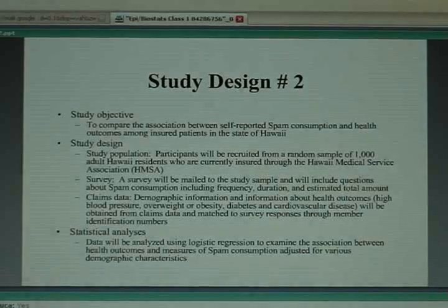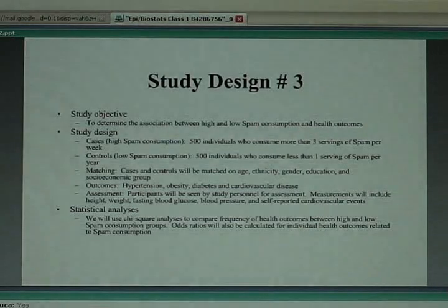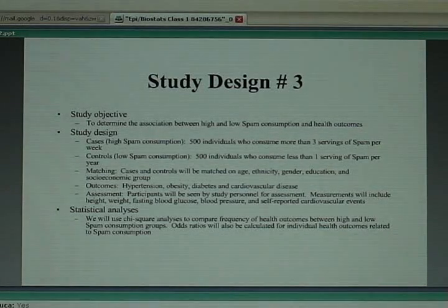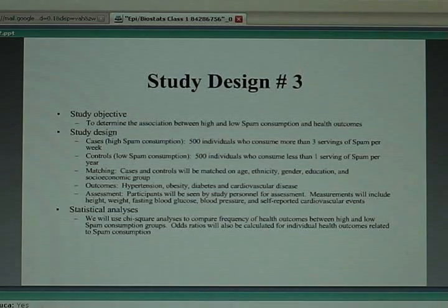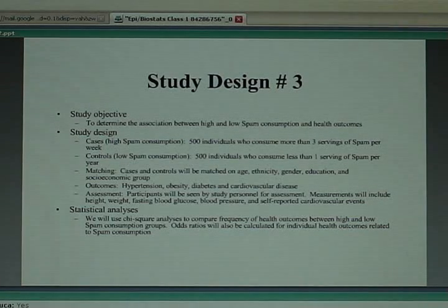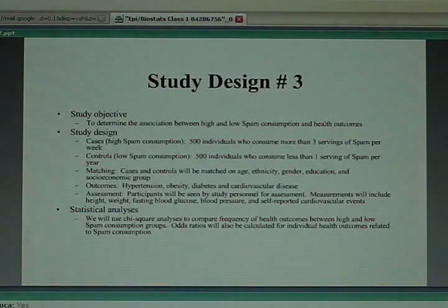Finally, someone proposed enrolling 500 consumers of spam — defined as people who self-report planning to eat spam at least three times a week — and comparing them to another 500 individuals who plan to eat spam less than once a week, matched on age, ethnicity, gender, and similar factors. The outcomes observed would be similar to before: hypertension, obesity, diabetes, and cardiovascular disease.